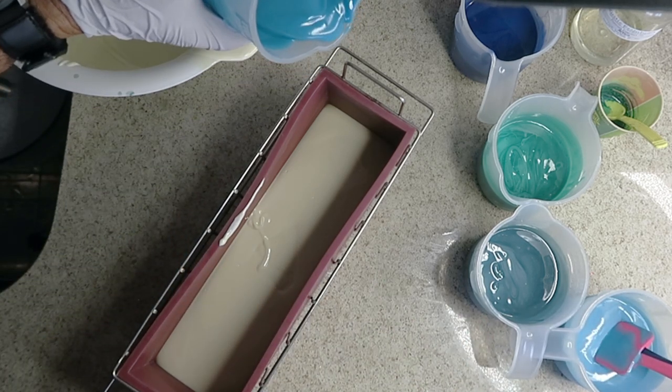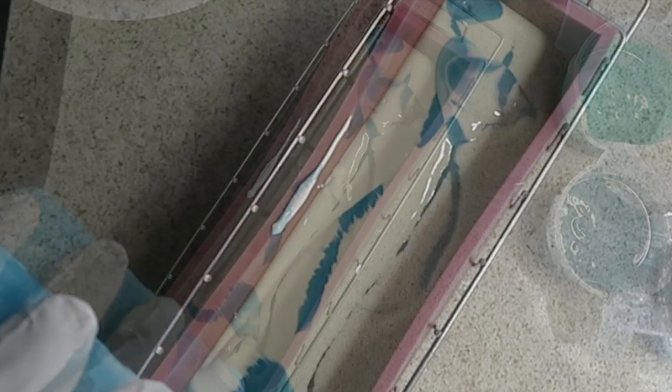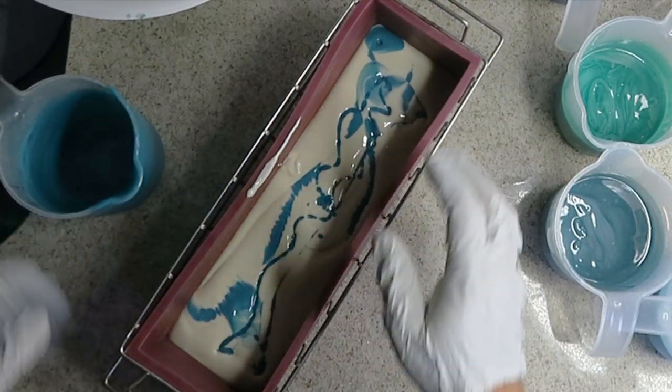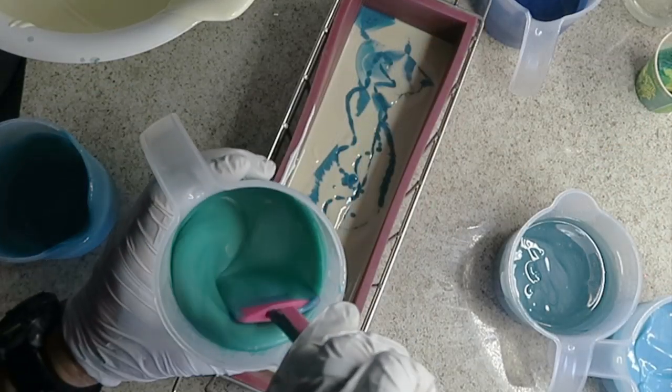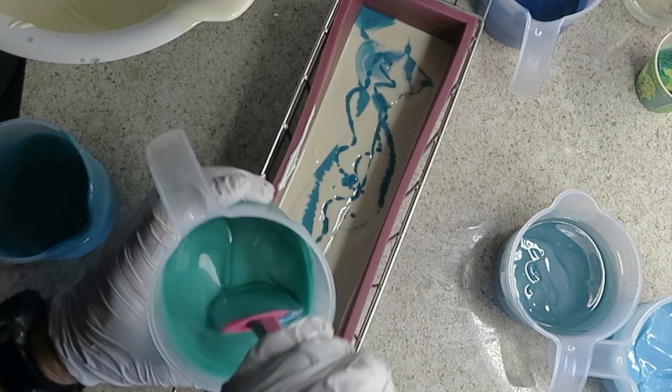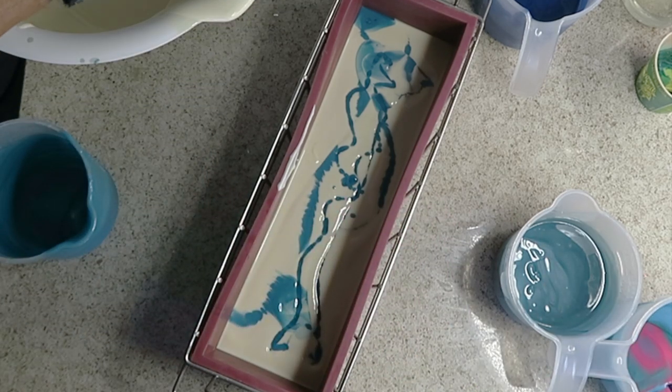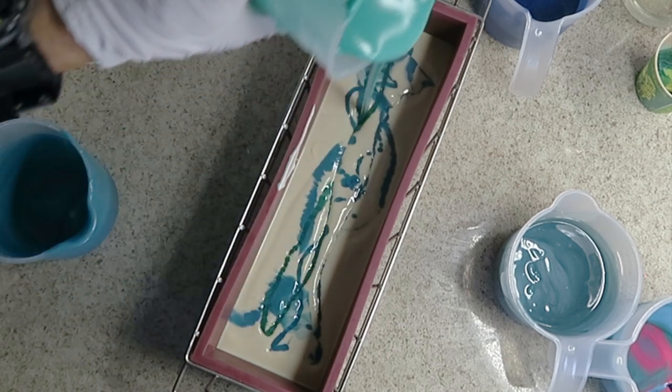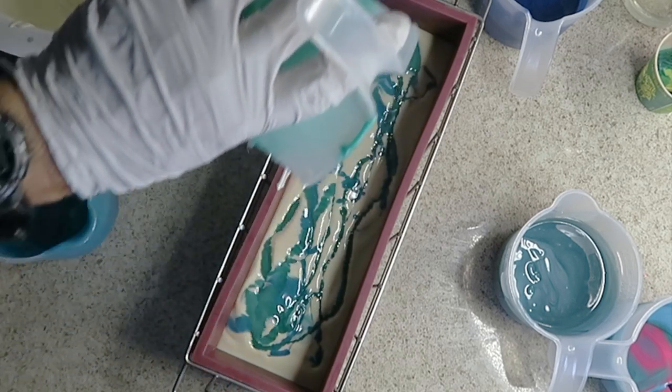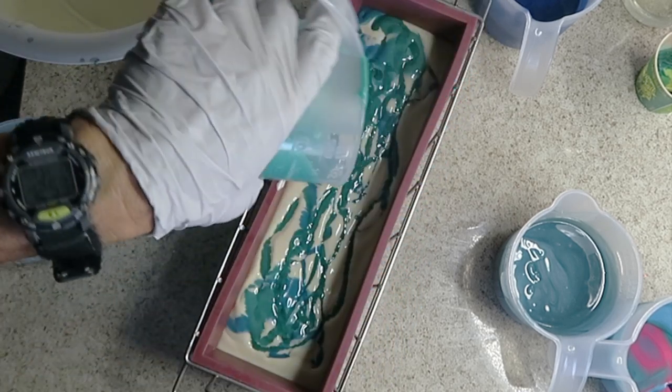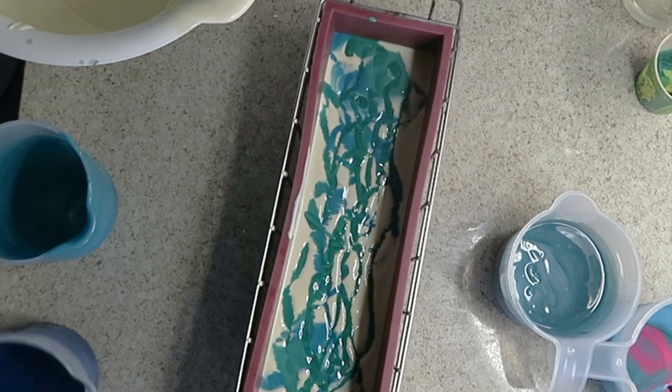And then I'm going to pour from up top here. Let it drip finely down there. Get some for the top. And follow that by this Caribbean Kiss green. I'm pouring from about a foot above the mold.